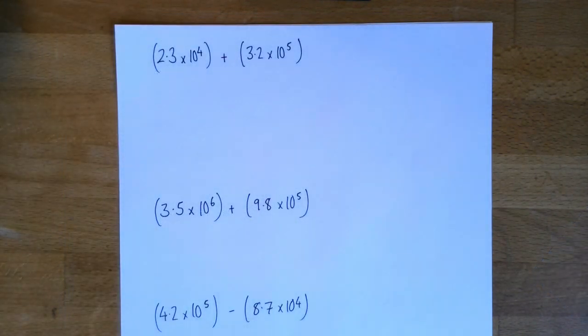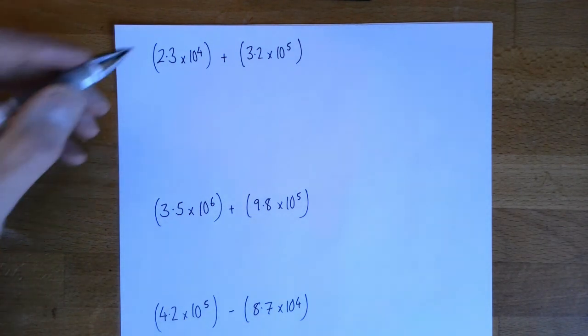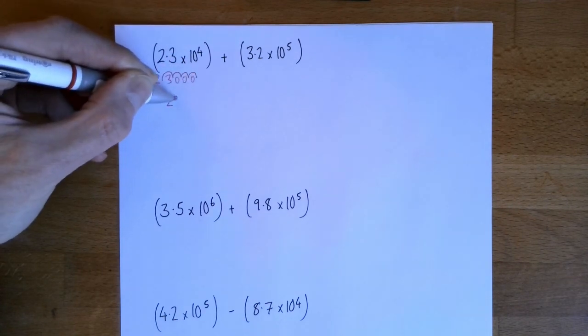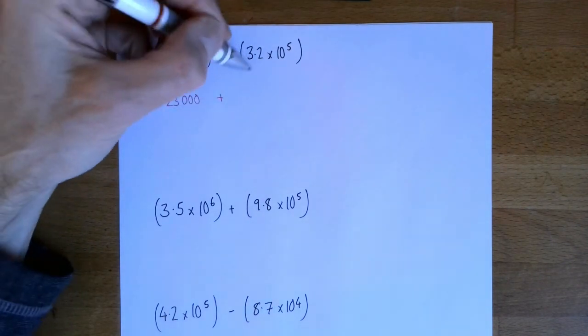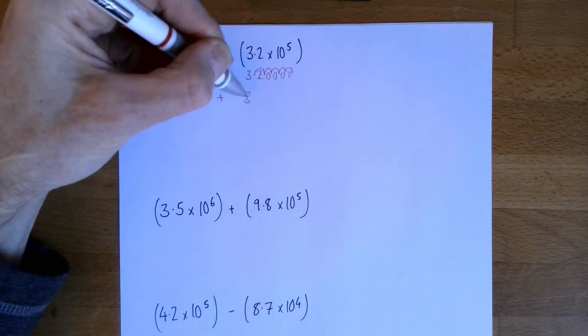One final thing while we do this quick revision of standard form. You might be asked to do a calculation with standard form. Now on a calculator paper, really easy. Just type it on your calculator. But on a non-calculator paper, it's a bit more complicated. And multiplying and dividing are one issue. We'll perhaps cover that in another revision lesson. Adding and subtracting are a little bit trickier. So we're just going to briefly finish by looking at how we can add and subtract numbers in standard form. And I think the easiest way to do it is to change them back to ordinary numbers. So 2.3 times 10 to the power of 4. That's 4 jumps. 1, 2, 3, 4. So that is 23,000. And 3.2 times 10 to the power of 5. So that's 5 jumps. 1, 2, 3, 4, 5. So that's 320,000.